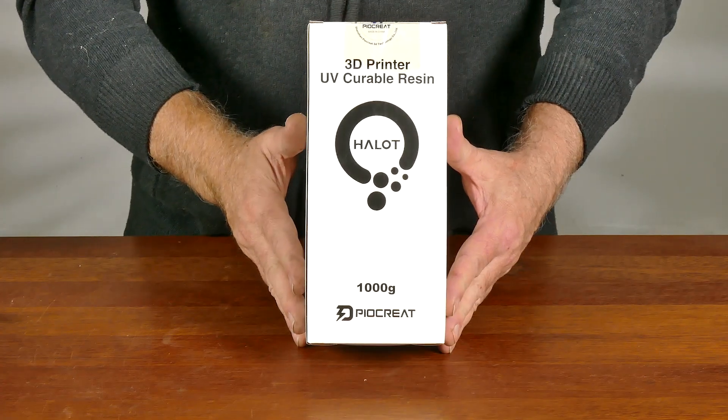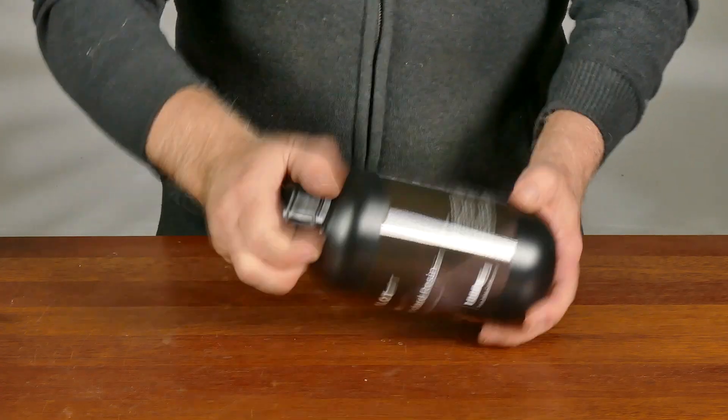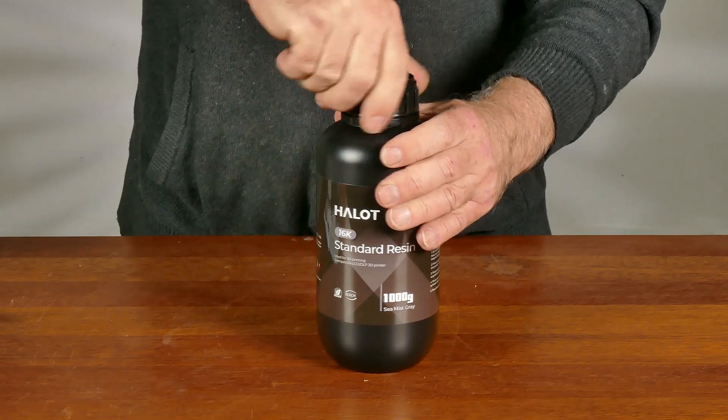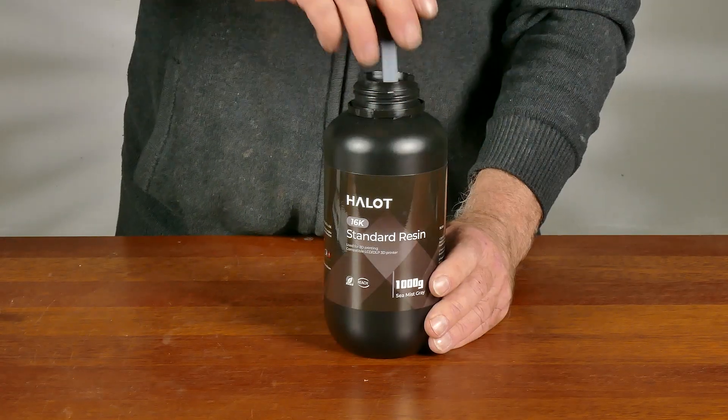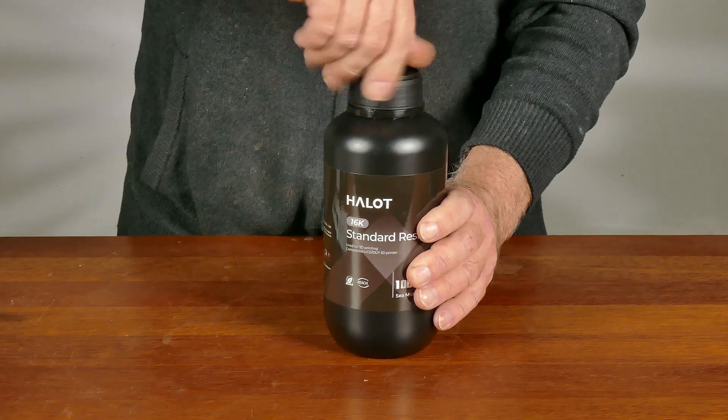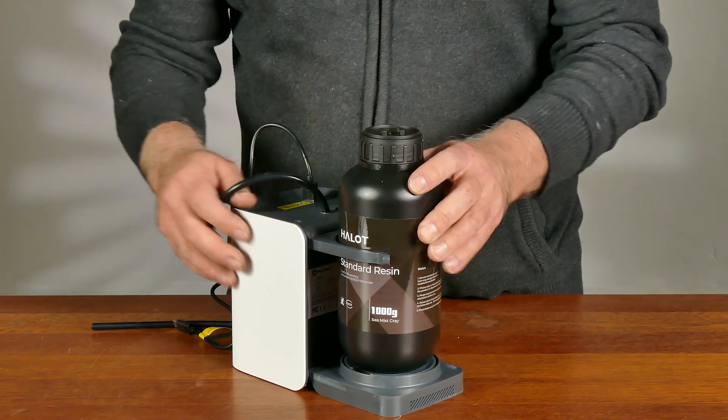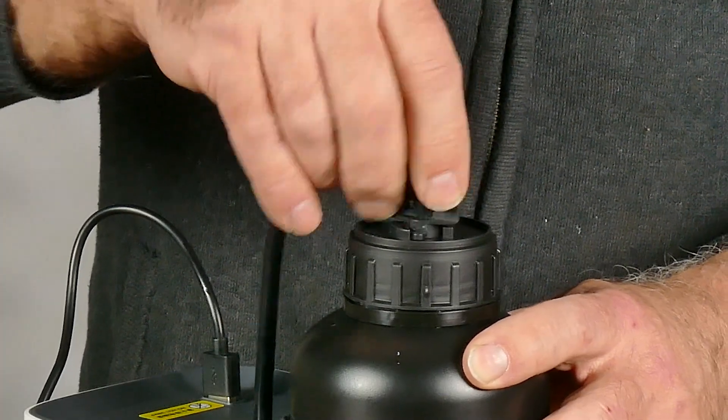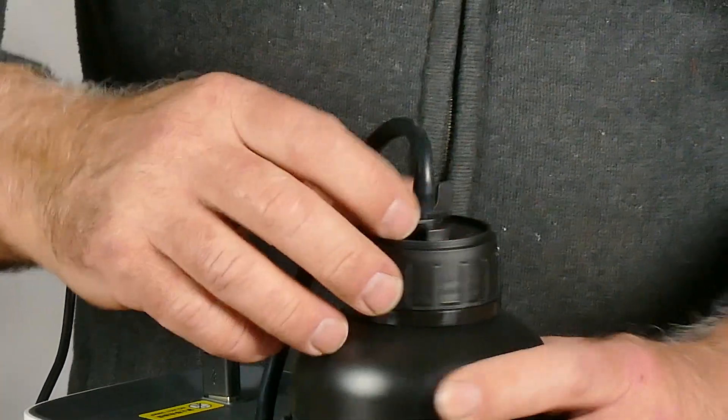For the test prints I'll be using some of this resin from PO Create, and this is 16K standard resin so it'll be perfect for the test. They do a whole bunch of different types of resins as well as water-based versions. I then connect the banner clip to the top of the bottle and this feeds the resin into the machine.